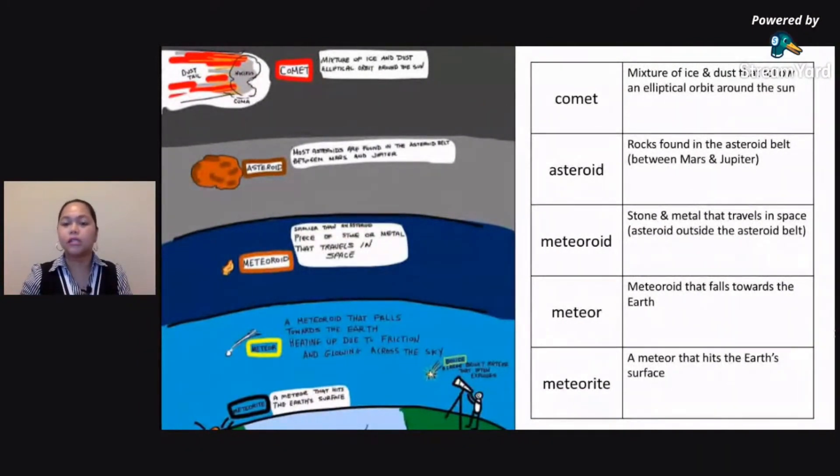Now, asteroid naman, pag sinasabi mong asteroid, these are rocks found in the asteroid belt, which is found between Mars and Jupiter. Meteoroid, these are stones and metals that travels in space. So yung meteoroid mo are actually like asteroid, pero outside sila sa asteroid belt. So these are asteroids outside the asteroid belt.